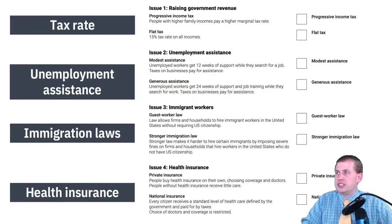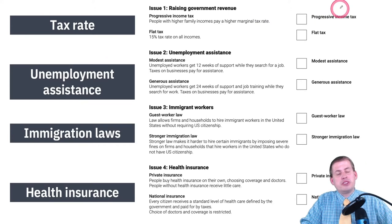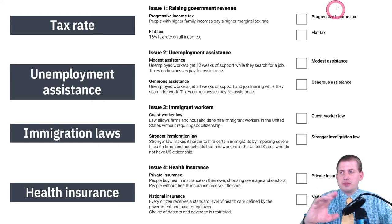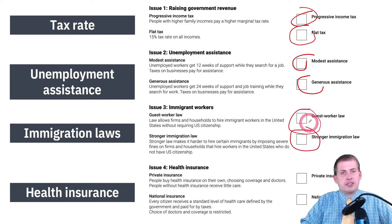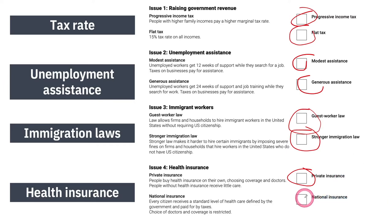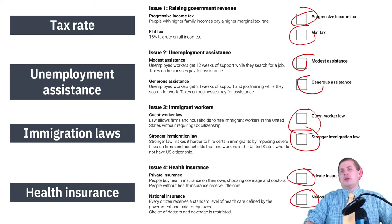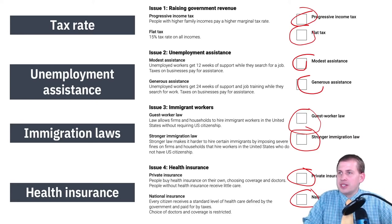So with that brief introduction to progressive taxation, based on your personal background — whether you're an unemployed student, unemployed worker, CEO, retired person, or other persona in the simulation — you vote on whether you want a progressive income tax or flat tax, modest or generous unemployment assistance, a guest worker law or strong immigration laws, and private insurance versus a national insurance system. When I've tallied the votes at BYU, the flat tax, modest assistance, stronger immigration laws, and private insurance generally won — in part because of how I stacked the roles with more retired people and CEOs.